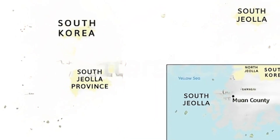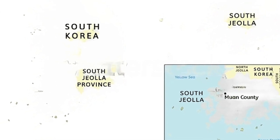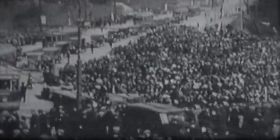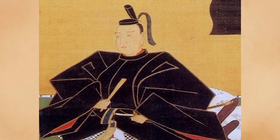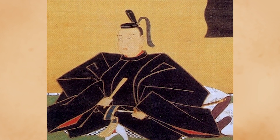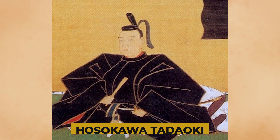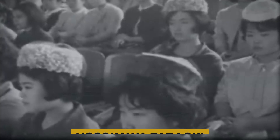Another example was Lady Jong, a noblewoman in Jeolla province. She was captured by the Japanese along with her husband and son, who were both killed in front of her eyes. She was then taken to Japan as a slave of a daimyo named Hosokawa Tadaoki. She endured years of abuse and humiliation, but never gave up her dignity. She secretly taught the Korean language and culture to other captives, helped them escape or communicate with their families, and wrote poems expressing her sorrow and longing for her homeland.